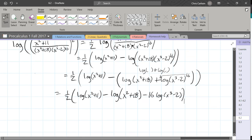Last step, we still have that half hanging out front. We're going to distribute it to all three parts. First, second, and third. So we got half log x squared plus 11 minus 1 half log x squared plus 18. 16 over 2 is 8, so minus 8 log.